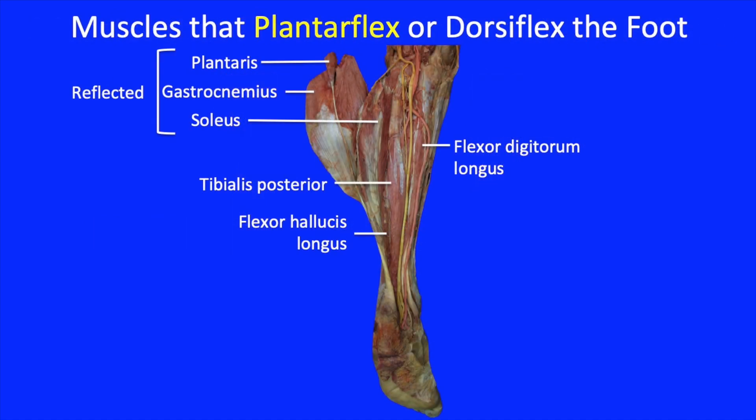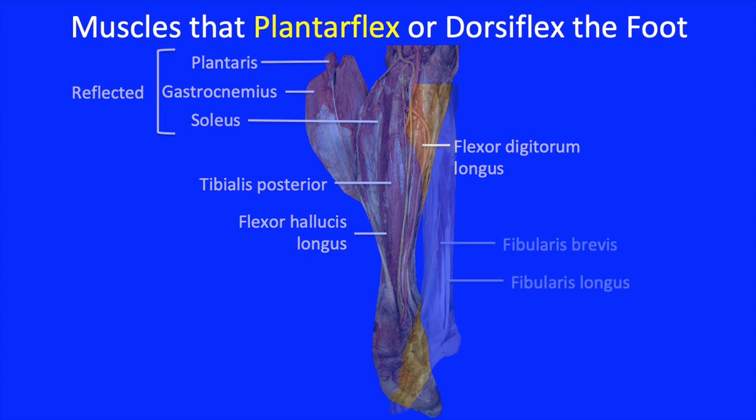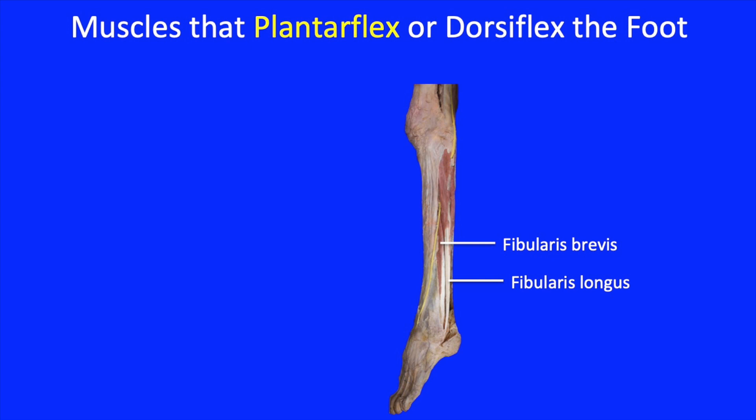Deep to the superficial group, we find three muscles that help with plantar flexion. From lateral to medial, these are the flexor hallucis longus, the tibialis posterior, and the flexor digitorum longus. The last two muscles that also help with plantar flexion are on the side of the leg — they are the fibularis longus and brevis, which we will discuss further later.